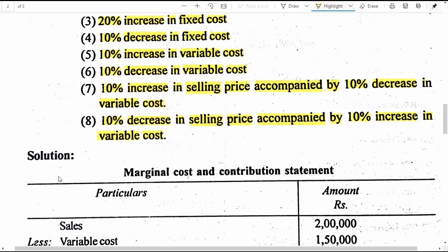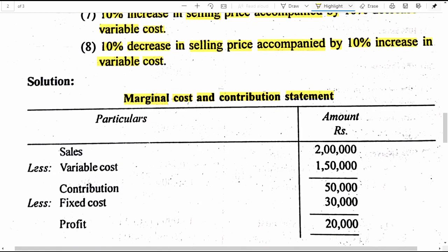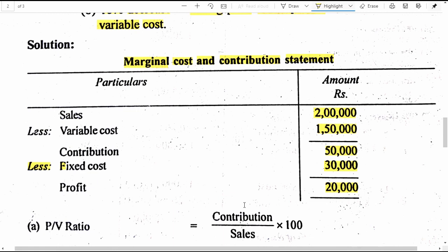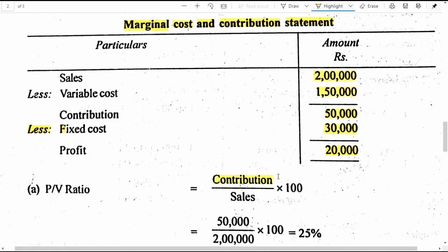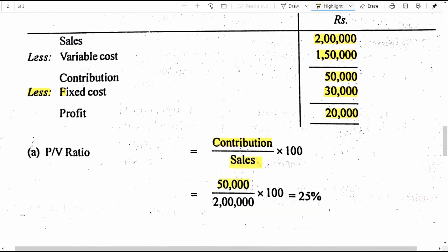Now let us prepare a small statement in a customized way, which could be named as a marginal cost and contribution statement, from which we can compute the PVR, BEP and margin of safety for the standard situation. Sales as presented in the problem is 2 lakh rupees. Less variable cost 1 lakh 50 thousand gives us 50 thousand rupees of contribution. PV ratio is contribution divided by sales into 100, which is 50 thousand divided by 2 lakh into 100, giving us 25 percent.